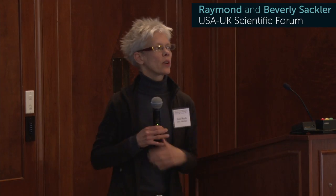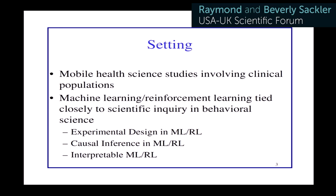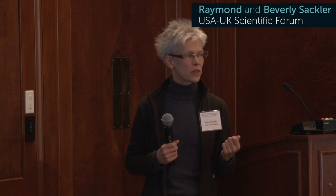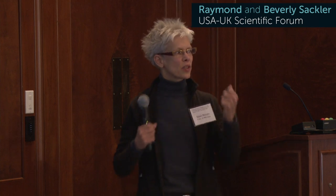The setting we're interested in is quite different from many people who are working in CS — it's about a clinical population. We don't tend to have large sample sizes, and we're running studies that are expensive. When you have an expensive study, you not only want to do machine learning, but you also have to adapt to the needs of your collaborators. The behavioral scientists have goals too, and these studies have to both help inform their science as well as ours. Today I'm going to focus mainly on experimental design, but you'll see there are compromises — you have to allow both sides to come together when you run these kinds of studies.